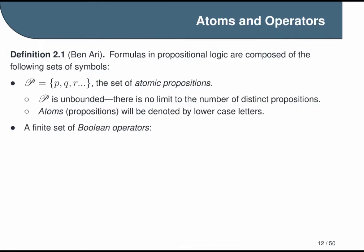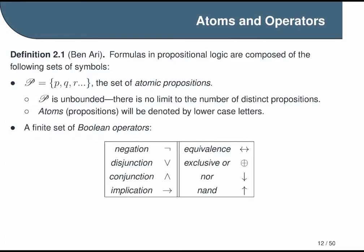Our second set is just a finite set of Boolean operators, and you have probably used most, if not all, of these before. Benari uses a fairly rich set of operators that includes the exclusive OR, NOR, and NAND operator. Many textbooks will use a smaller set, and I think this is because it makes the proof shorter. But everyone uses an equally expressive set of operators, meaning they're all capable of making the same statements.